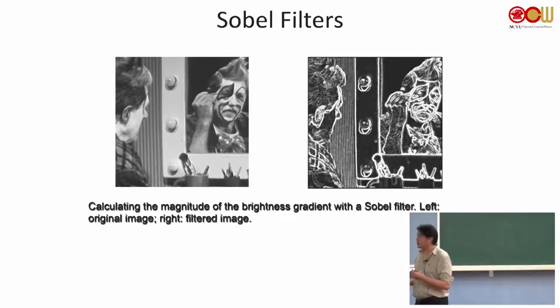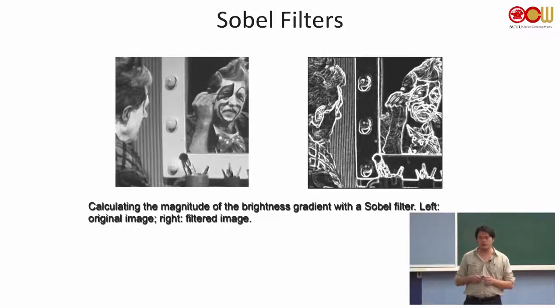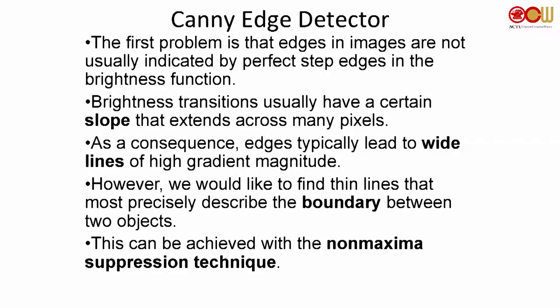The thickness of the lines can be somehow different, which causes problems. If you have very thick lines and want to fit them to line segments, it will cause some issues. But don't worry — we have the Canny edge detection. The thick lines come from high gradient magnitude. One important step in Canny is to find the maximum value of those high gradients.